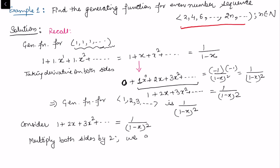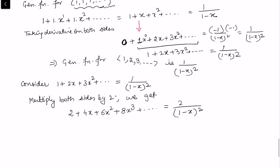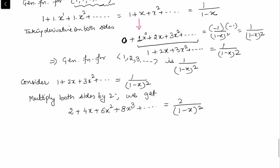After multiplying by 2, the first term becomes 2, the next term is 4x, then 6x², then 8x³, and so on. The right side becomes 2/(1 - x)². So 2 is the constant term a₀, 4 is a₁ appearing with x, 6 is a₂ appearing with x².